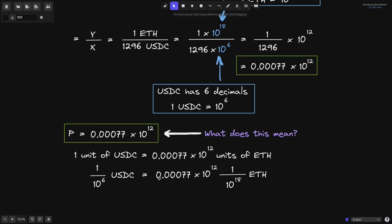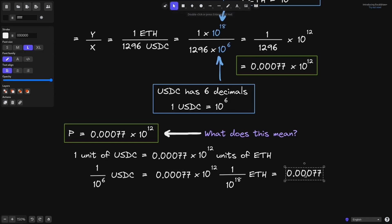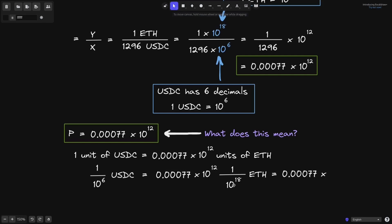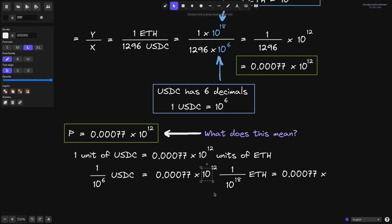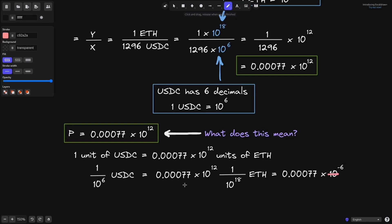So 1 over 10 to the 6 USDC is equal to 0.00077 times 10 to the 12 units of ETH, and one unit of ETH is 1 over 10 to the 18. Simplifying, we have 10 to the 12 divided by 10 to the 18, which leaves 10 to the minus 6. We also have 1 over 10 to the 6, which is 10 to the minus 6, and these two cancel out.